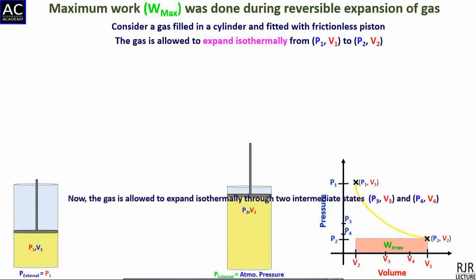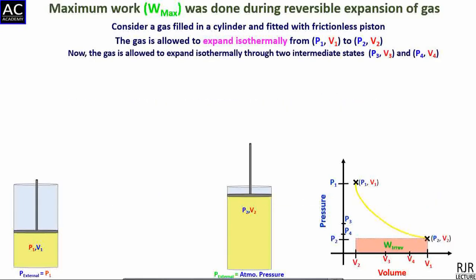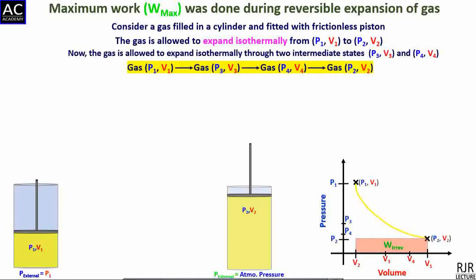Now the gas is allowed to expand isothermally through two intermediate states P3,V3 and P4,V4. Imagine there are three weights exerting pressures P3, P4, and P2 on the piston, so that the pressure of the enclosed gas P1 is in equilibrium with the external pressure, which is equal to the sum of pressures P3, P4, and P2.